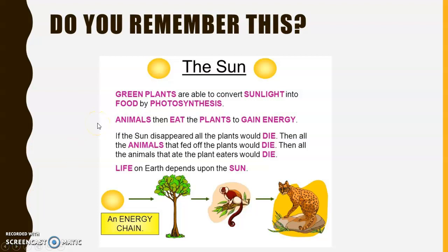Do you remember this about the sun? Green plants are able to convert sunlight into food by the process of photosynthesis. Animals then eat the plants to gain energy. Have you thought about this: if the sun disappears, all the plants will die. Then all the animals that feed off the plants will die, and then all the animals that ate the plant eaters would die. Life on earth depends on the sun.